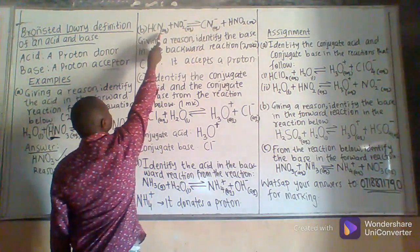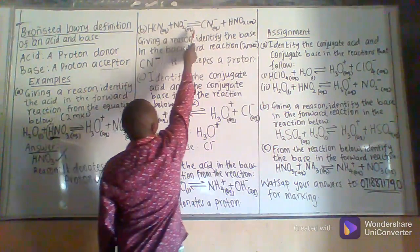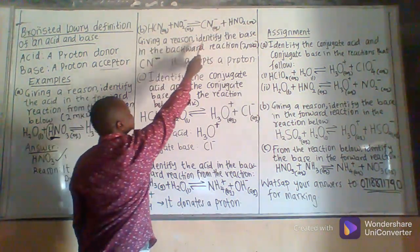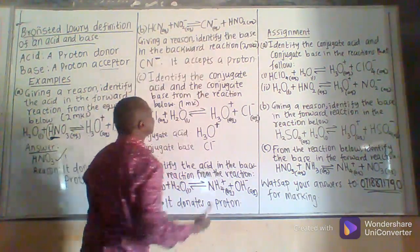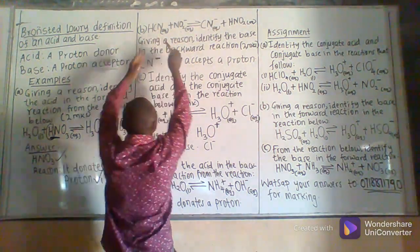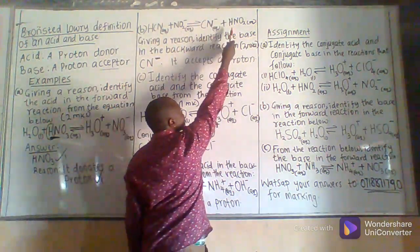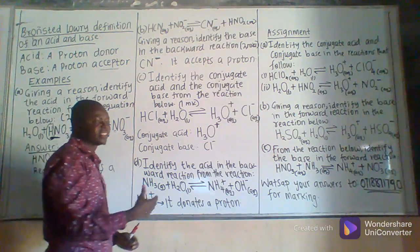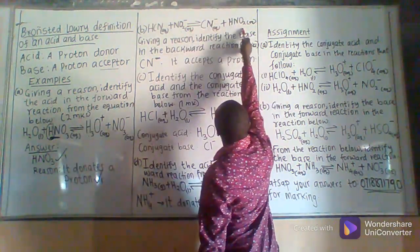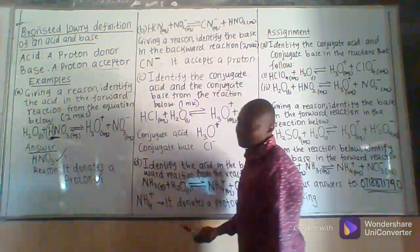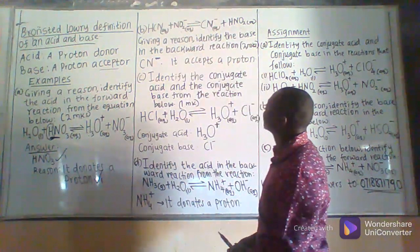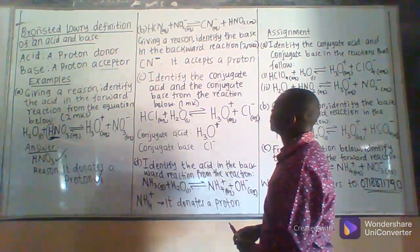We have HCN reacting with HNO2 to form CN negative and HNO2. You have been asked: given a reason, identify the base in the backward reaction. This reaction also has the forward reaction proceeding from left to right and the backward reaction proceeding from right to left. This time round, we have been asked about the backward reaction, which involves HNO2 combining with CN negative. When identifying the base in the backward reaction, we are going to consider between HNO2 and CN negative the one that is going to accept a proton.